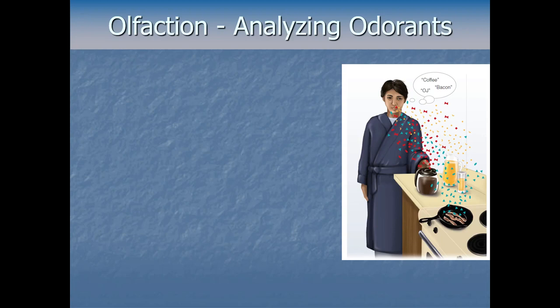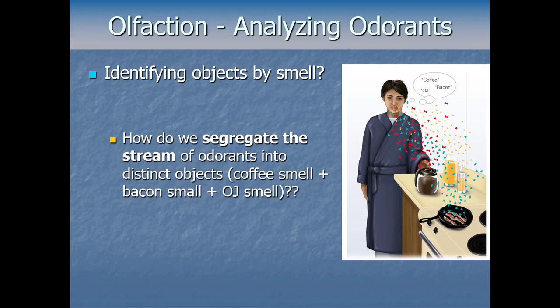Many objects we think of as having a single smell — like bacon, orange juice, or coffee — actually give off a ton of different molecules as odorants. The smell of coffee alone has around a hundred different molecules. What hits our nose in the morning is a big mixed-up clusterfuck of molecules from coffee mixed with bacon mixed with orange juice plus everything else in the room. So the brain faces a tough challenge: how do we segregate that stream of odorants into distinct objects we can identify?